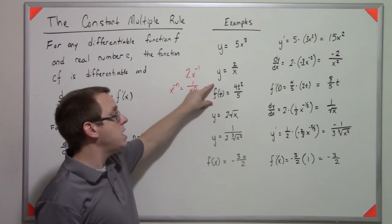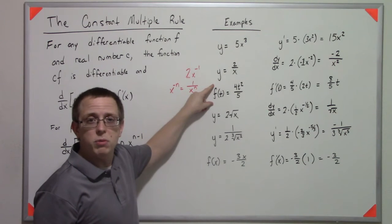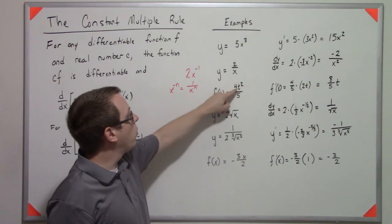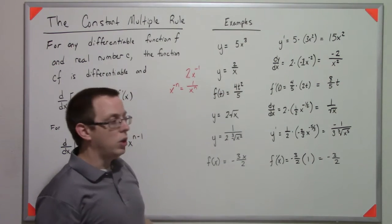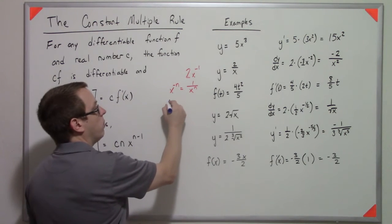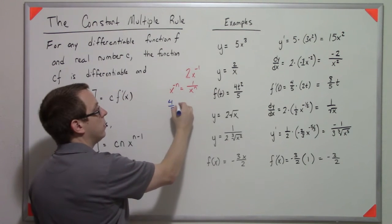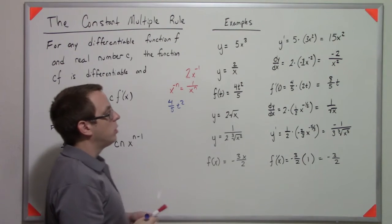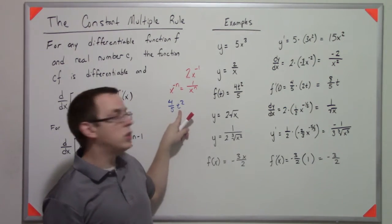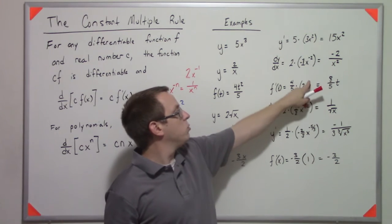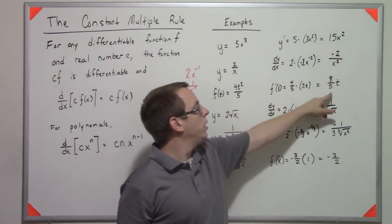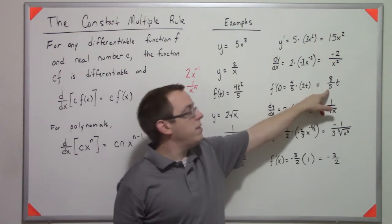So if we keep rolling, this is f of t here, which is still the same thing. We're just not using f of x, we're using f of t. We have 4t squared over 5. A better way to do that one, or a more convenient way, would be to write that as 4 fifths t squared. So we can pull that 4 fifths out, take the derivative of t squared, pull down the power and subtract 1 from it. So now we have 2t to the 1, which gives us 8 fifths t.